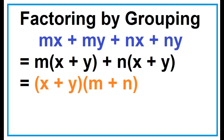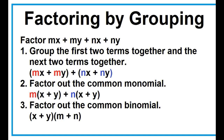Factoring by grouping. To factor by grouping: first, group the first two terms together and the next two terms together. Second, factor out the common monomial. And third, factor out the common binomial.